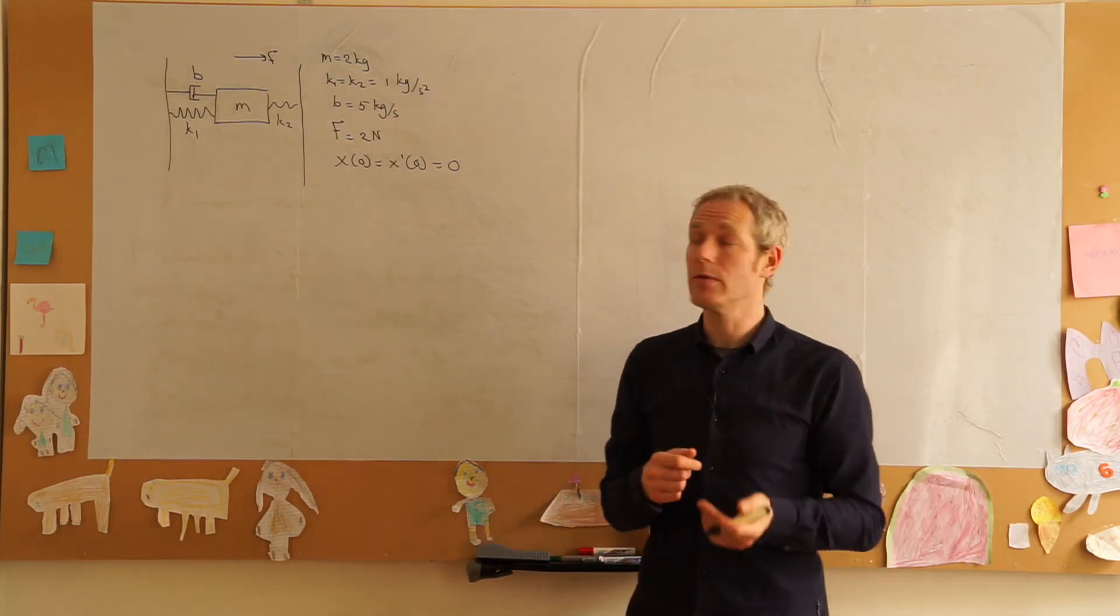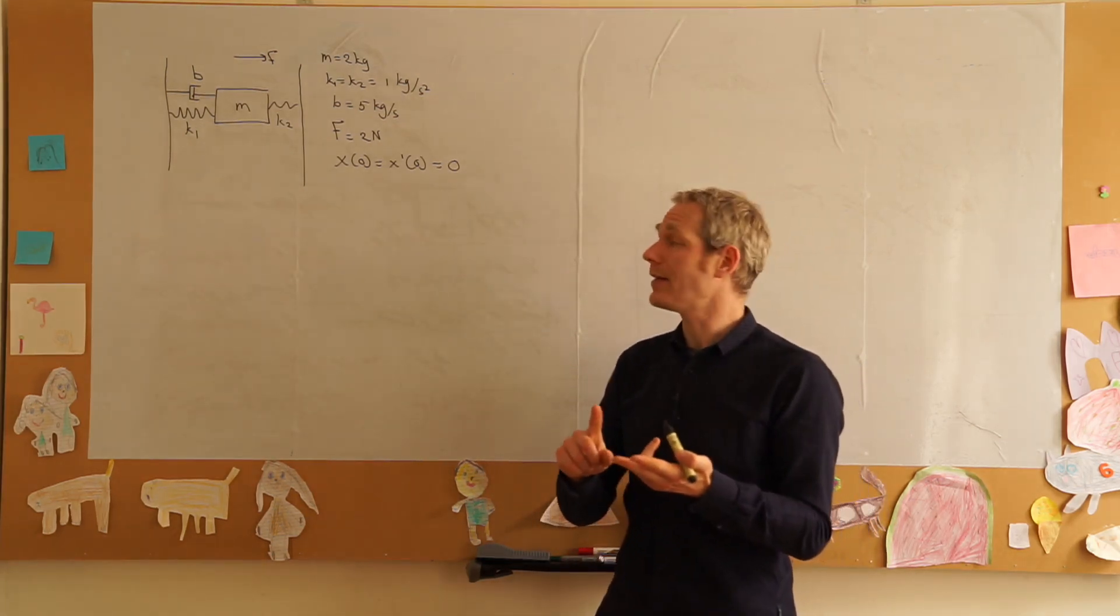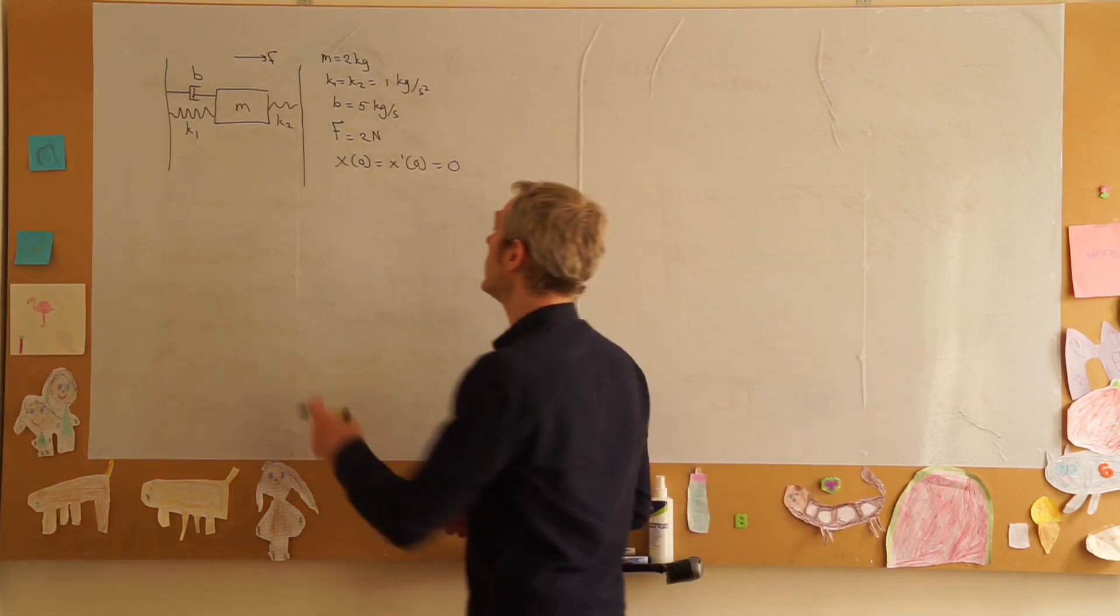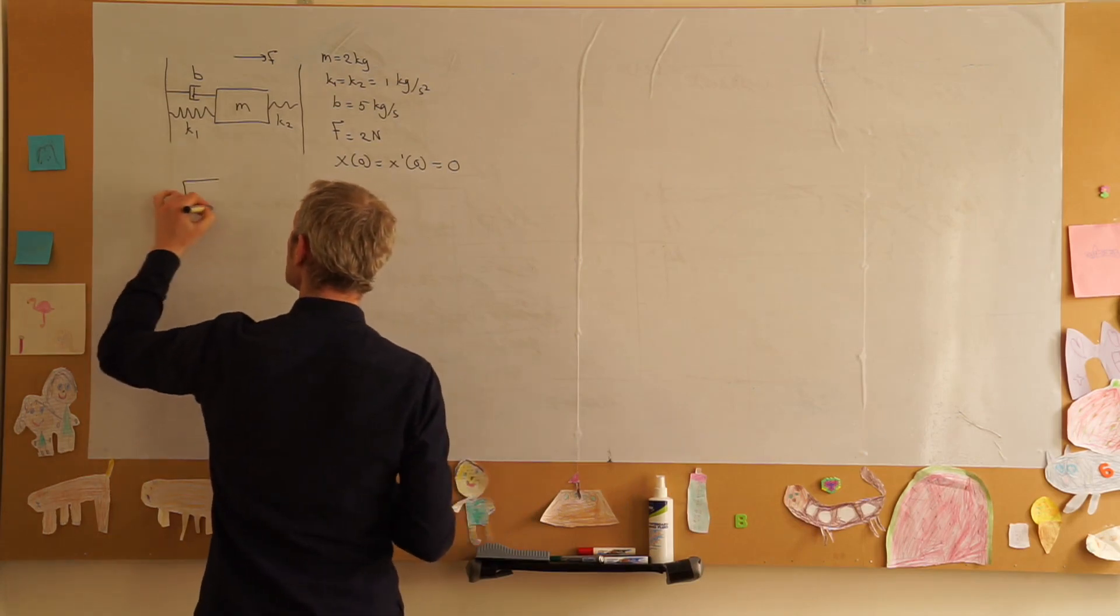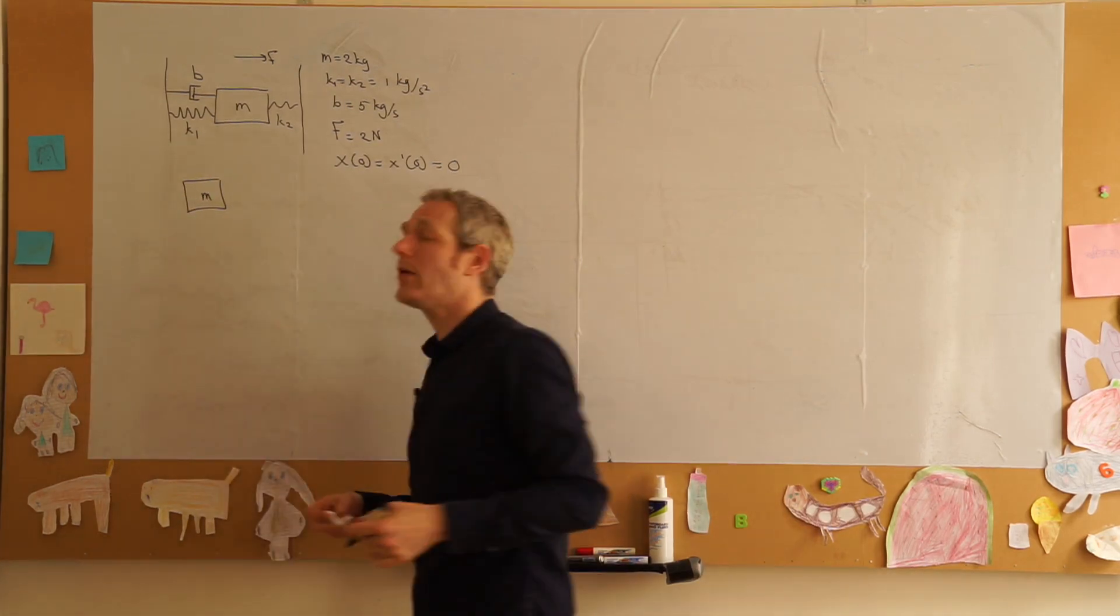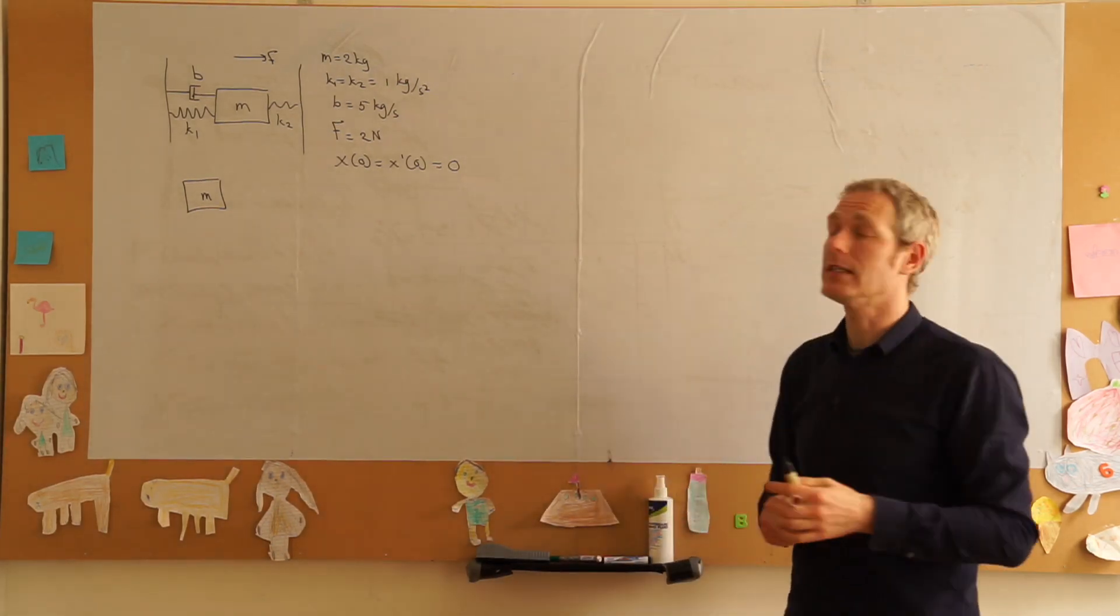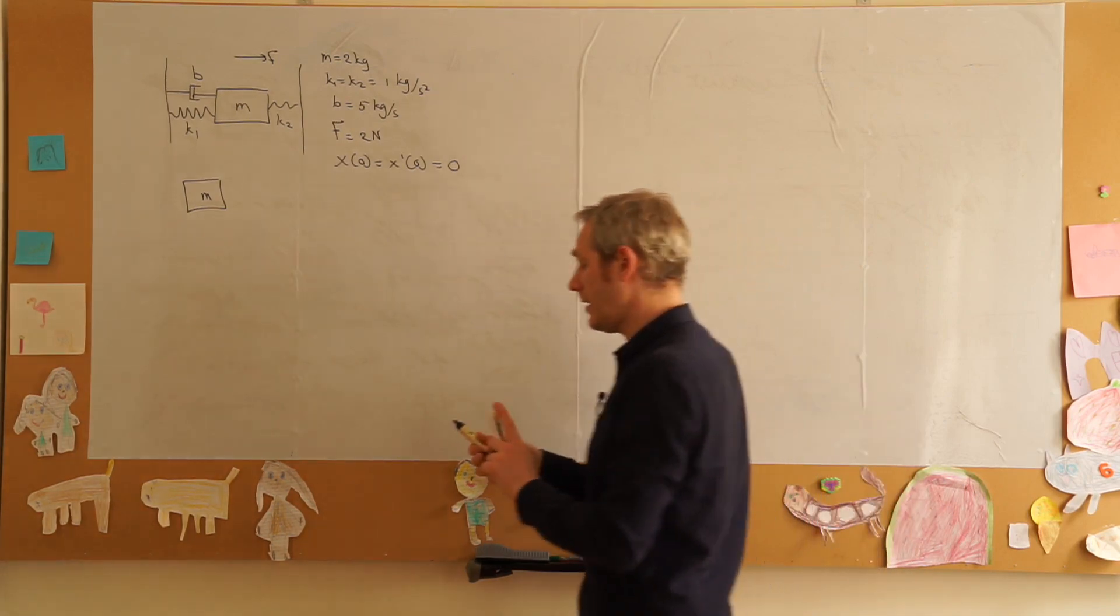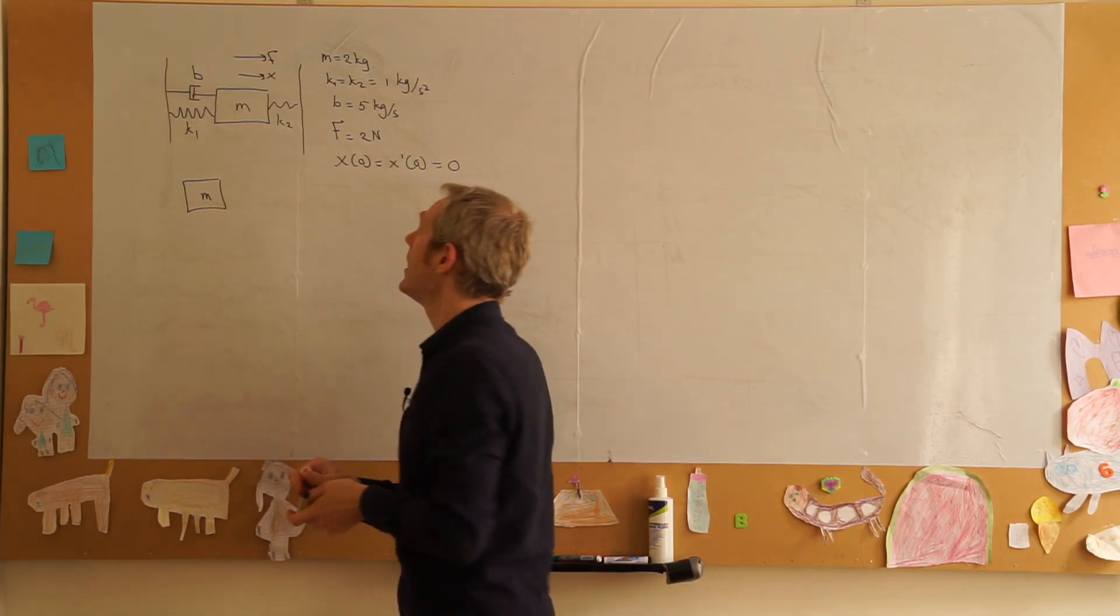The first thing we do if we have a physical problem is draw a free body diagram, we have an axis and we set up the equations of motion. So let's draw our free body diagram, we have our mass and now we want to see what the effect is of the forces as we displace our mass.